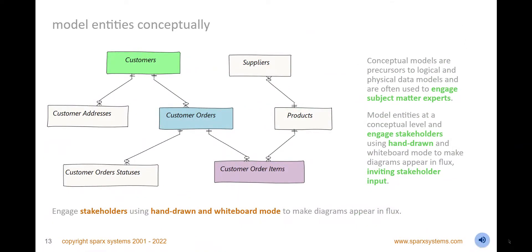Model entities conceptually, leaving the details to be resolved in logical and physical models. Use the information engineering standard or associations to show element cardinalities or multiplicities. Change the diagram appearance to whiteboard, custom, or hand-drawn mode creating a feeling that the diagram is still in flux, inviting stakeholder input. You can color elements and connectors to indicate semantics, groupings or use dynamic legends to color the diagram objects and connectors based on system or user-defined properties.